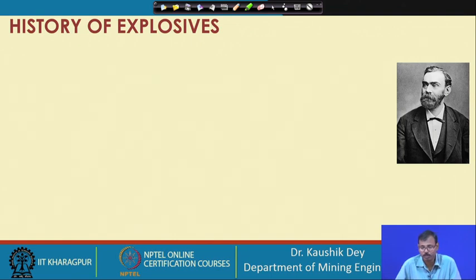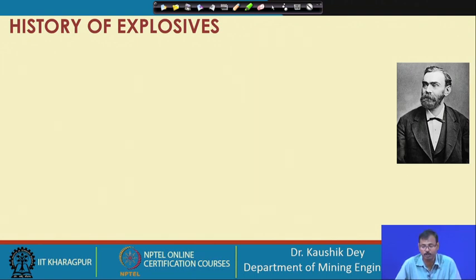I want to know whether you recognize this person — I expect most of you know him. He is Sir Alfred Nobel, a very famous person. He is the person who invented dynamite and who controlled the explosibility of nitroglycerin, allowing it to be used as a commercial explosive. Sir Alfred Nobel earned money from dynamite and donated all of it to the Nobel Trust, which is why we have the Nobel Prize.